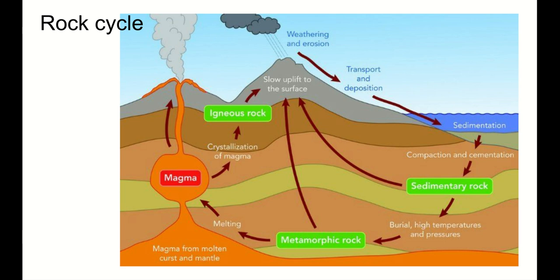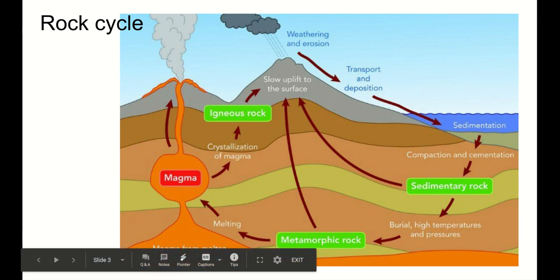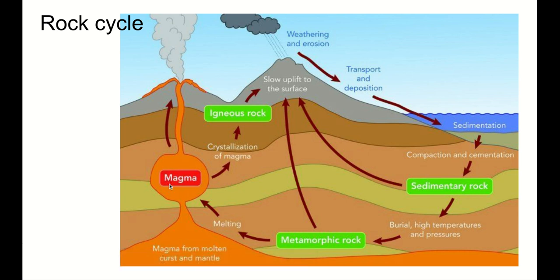We're going to start with the rock cycle, and I'm hoping this is something that's really familiar to you. Rock starts as magma deep underground. When that magma rises to the surface, it cools, and that cooled magma is called igneous rock. As that igneous rock and other surface rocks get eroded, those rock particles get washed into a body of water, especially the ocean, and as layers of sediment build up over time, those layers press down on each other, and through compaction and cementation, those layers of sediment turn into sedimentary rock.